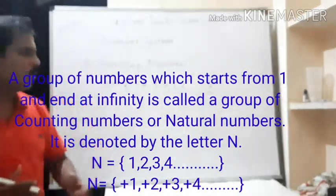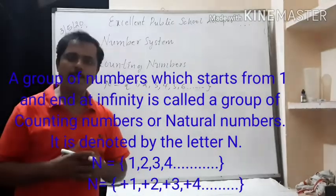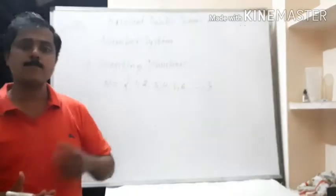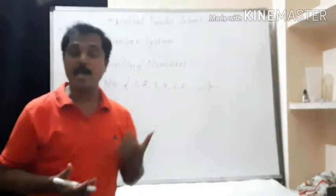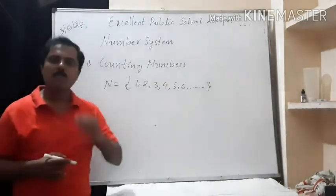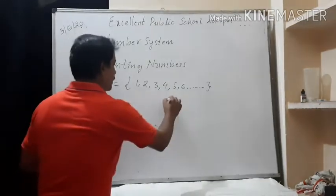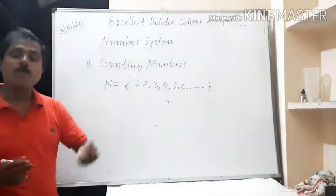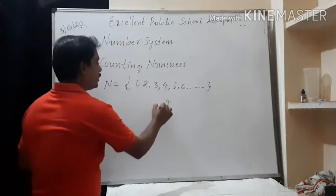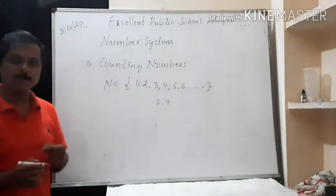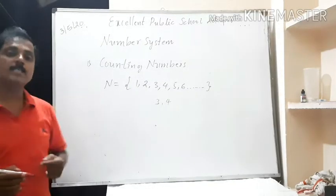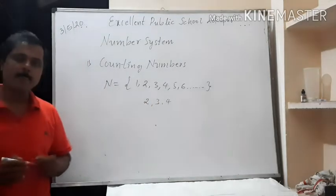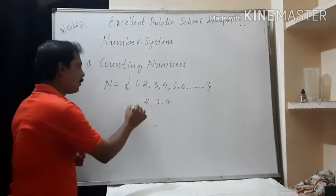Do you think that only this group of counting numbers is sufficient and will meet all the needs of our day-to-day life? No. Let us see how. If we have 4 rupees in our pocket, we write the number 4 from this natural number set. If we have 3 rupees, we use 3. If we have 2 rupees, we use 2. If we have 1 rupee, we write 1.